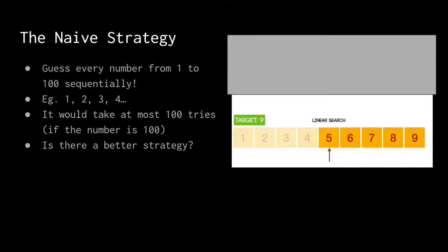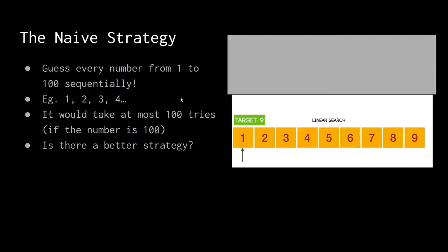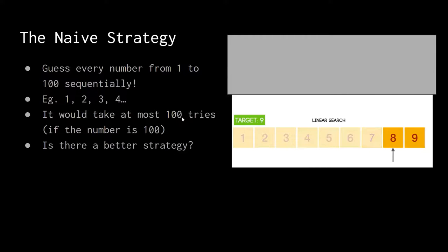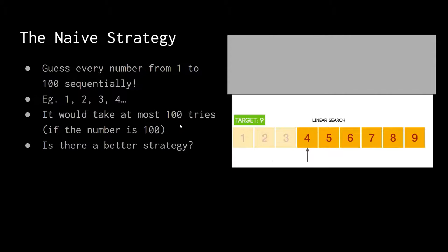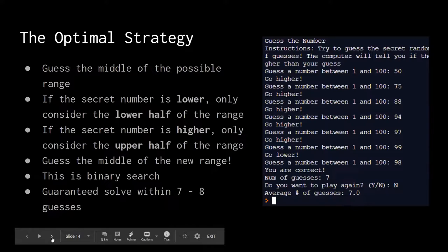Let's talk about the naive strategy first. This strategy ensures you're never going to repeat a number twice — you just go one, two, three, four, five, six, seven, eight, nine, ten, and so on. This is a really naive strategy, and it'll take you a hundred tries if the number is a hundred. So if you're really unlucky, you have to try a hundred tries. So, is there a better strategy?